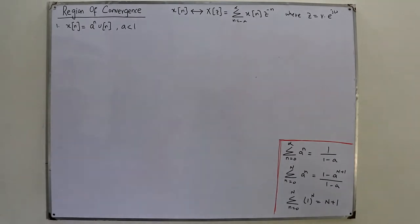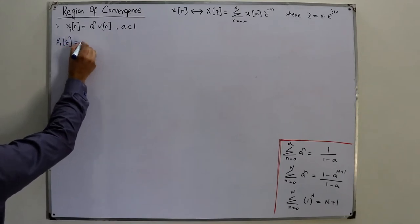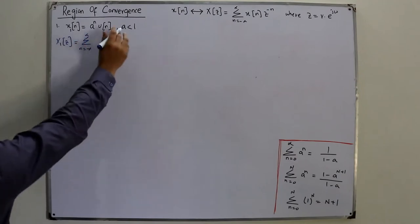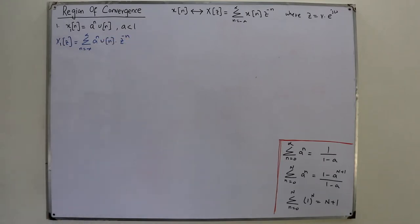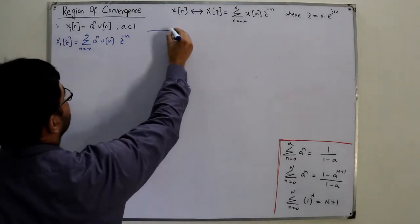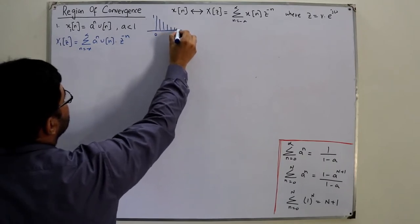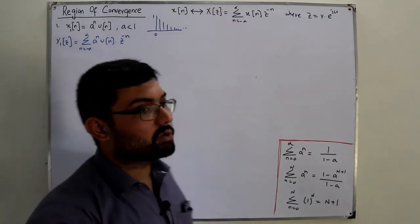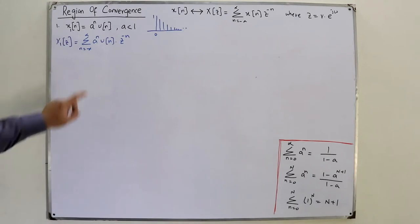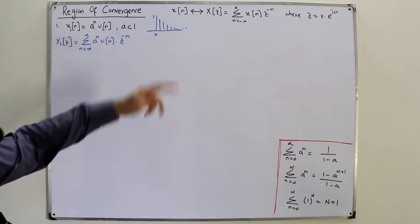Now let's get into the example. x(n) is given; the corresponding X1(z) is unknown. My X1(z) equals the summation from n = negative infinity to positive infinity of a^n · u(n) · z^(−n). Since u(n) is a right-sided signal, it separates out the right-hand side, giving us a one-sided summation from n = 0 to infinity.